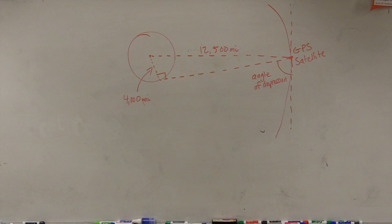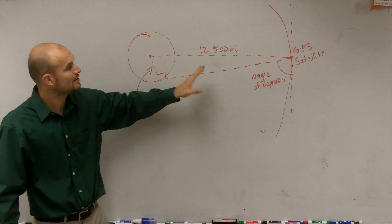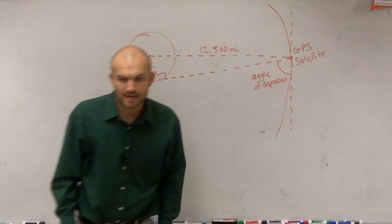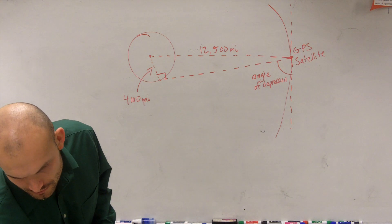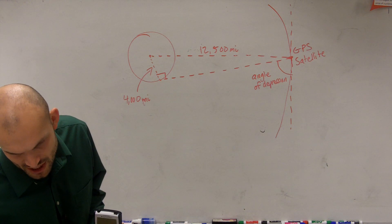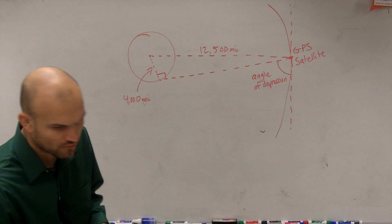Alright, so what we're going to do for this problem is we have Earth here. Here's Mother Earth and we have a GPS satellite. Now what the question is asking us is, they want us to find the angle of depression from the satellite to the horizon. Assume the radius of the Earth is 4,000 miles.